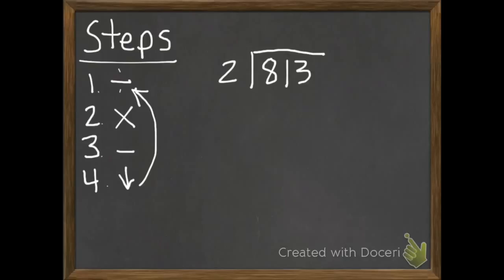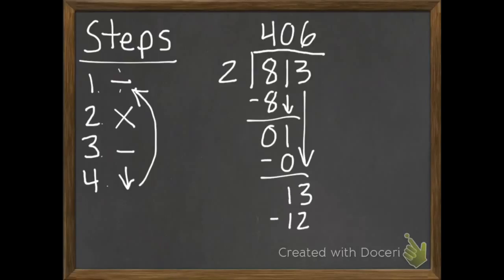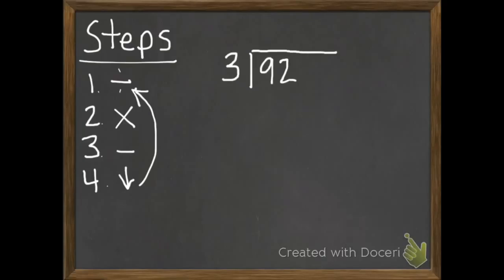Let's see how you did. You should have gotten 406 remainder 1. There should be a 1 up there at the top. So if you need to, go ahead and pause so that you can see if you got everything done. If it all lines up, go ahead and go on to the next problem. There we go, there's our 1.